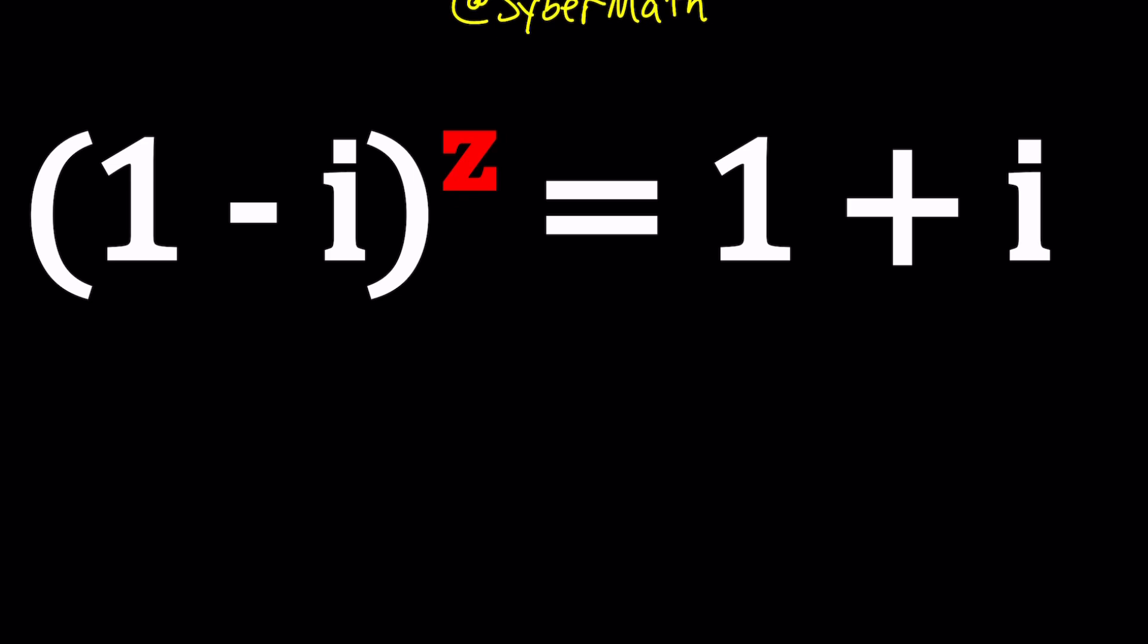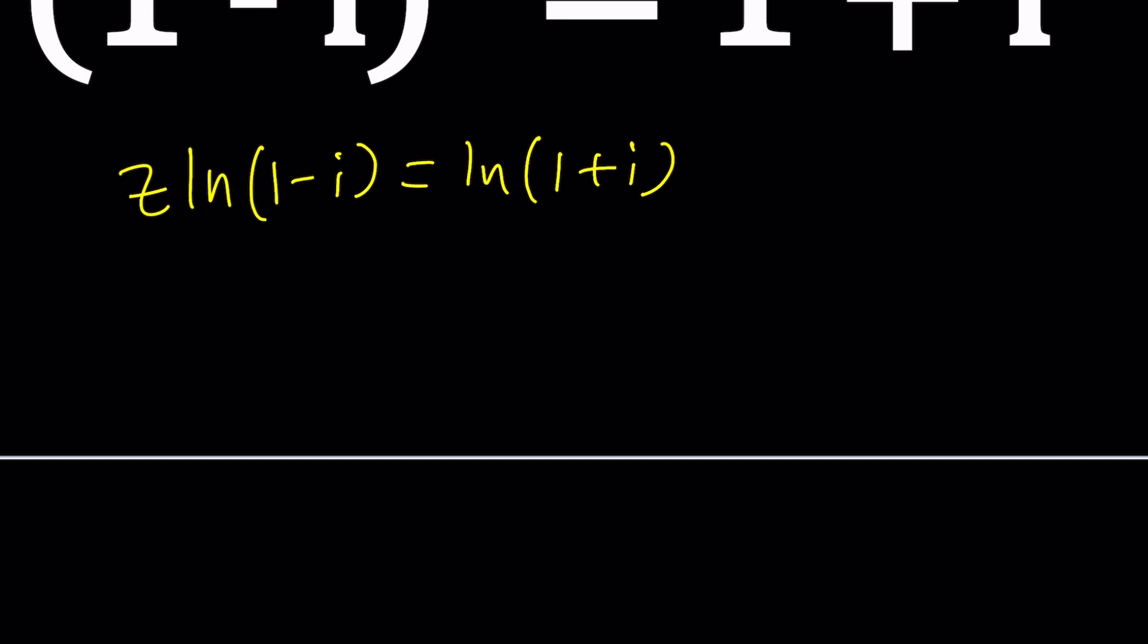So if you ln both sides, you're going to get something like this: z ln 1 minus i equals ln 1 plus i. A lot of times people write this as log, but it's ln, natural log. And then you can isolate z as ln 1 plus i divided by ln 1 minus i.